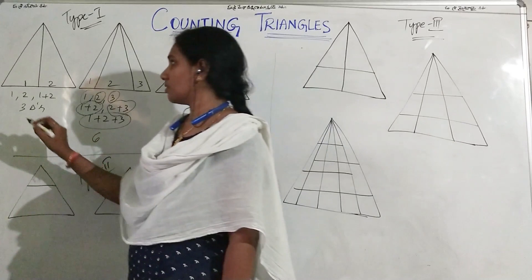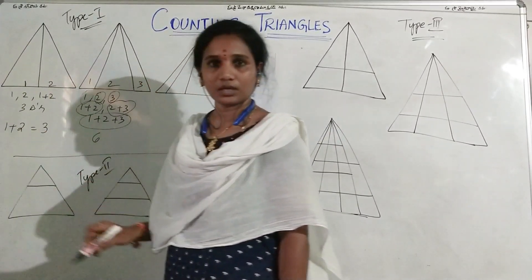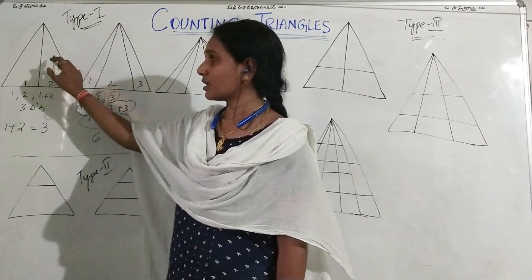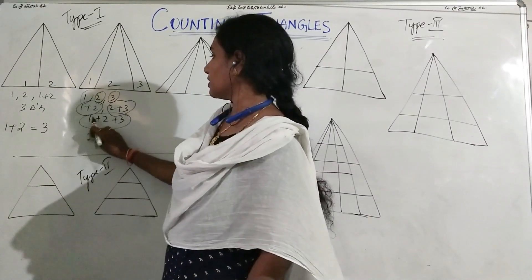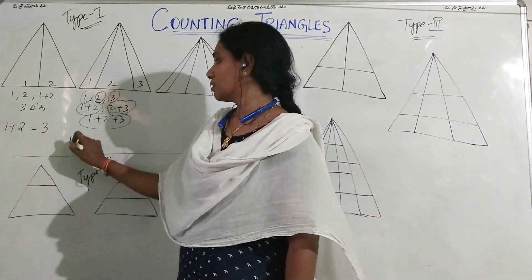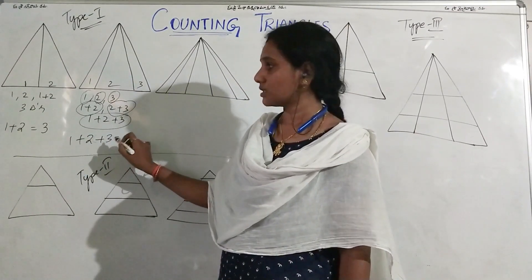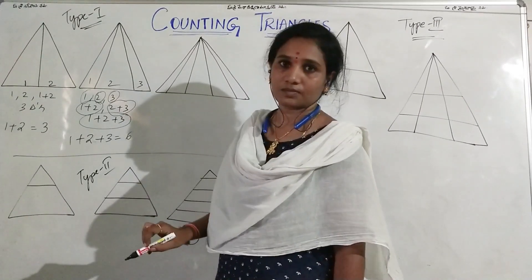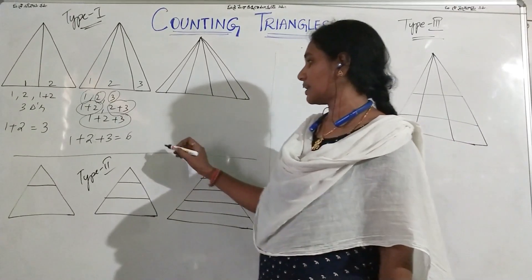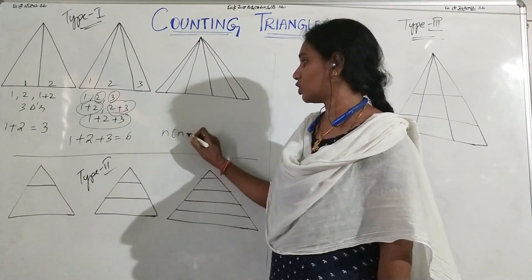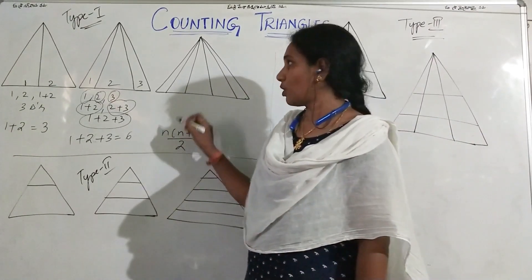Now here if you observe, I can write it as simply 1 plus 2 which is equal to 3, so number of triangles. Or 1 plus 2 plus 3 is equal to sum of first 3 natural numbers which is equal to 6. So let us define the formula for sum of first n natural numbers. The formula is n into n plus 1 by 2.